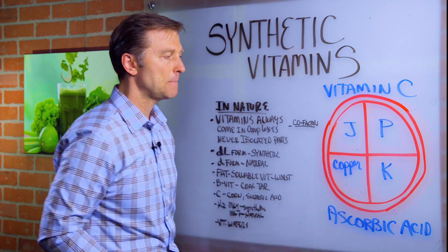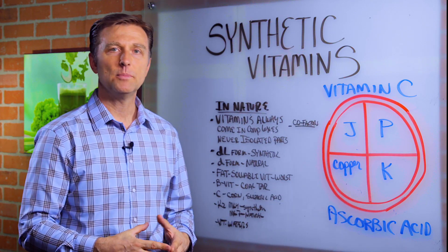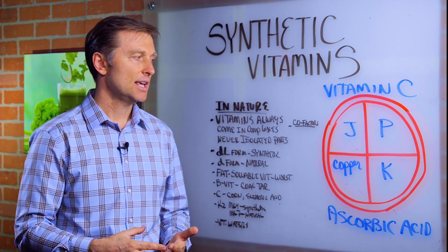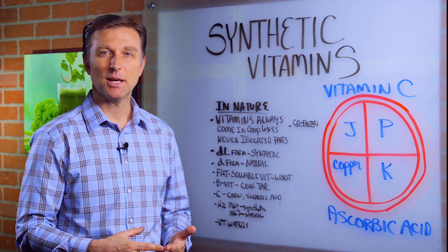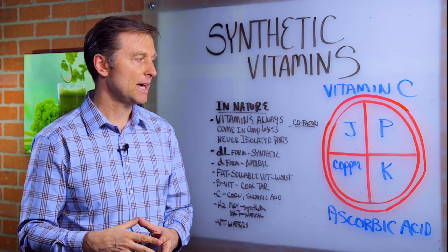And then we have vitamin K. Vitamin K is really important in clotting. So what do people get when they have vitamin C deficiencies? They get bruising, bleeding on the teeth, spongy gums, scurvy, pink toothbrush syndrome, all that.